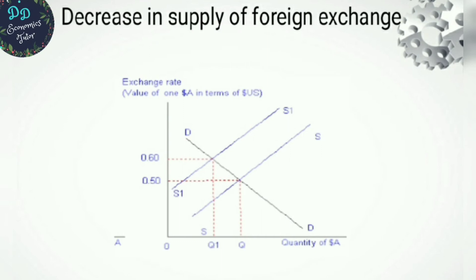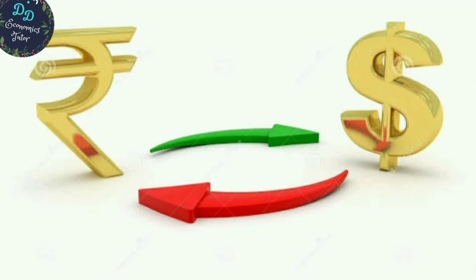Now let's look at the effect of depreciation on foreign trade — exports and imports. Depreciation of domestic currency encourages exports. A fall in the value of domestic currency means that with the same one dollar, the USA can now buy more Indian goods — for example, one dollar was 60 rupees but now equals 70 rupees. So imports by the USA will increase, which encourages exports for our country.